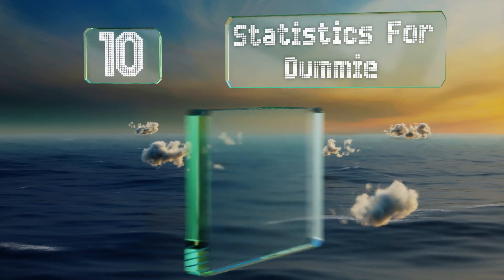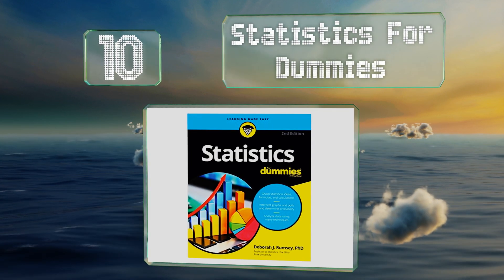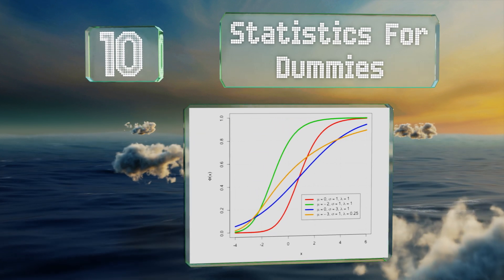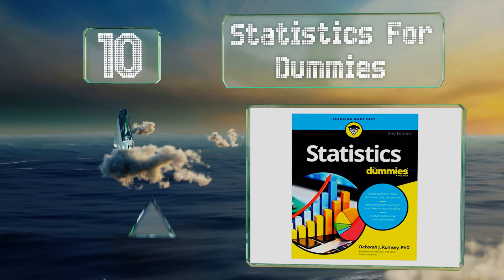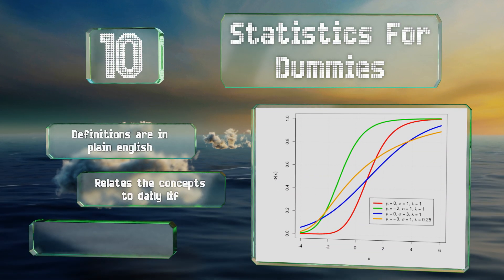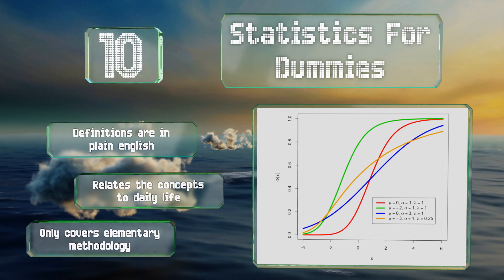Starting off our list at number 10, you can't get more basic than Statistics for Dummies, which offers one of the most informal introductions to the foundations of the subject of any text out there. It's a great gift for the family member or friend who's only recently taken an interest in the field. The definitions are in plain English and it relates the concepts to daily life.